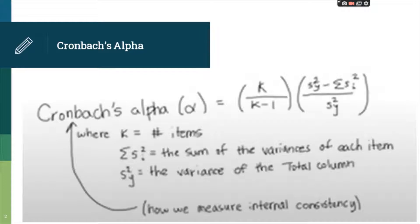Cronbach's alpha is how we measure the internal consistency, and it is usually used for non-dichotomous items. You will see the symbol we use for Cronbach's alpha and also the formula: K divided by K minus 1, multiplied by S squared Y minus the summation of S squared I, divided by S squared Y.